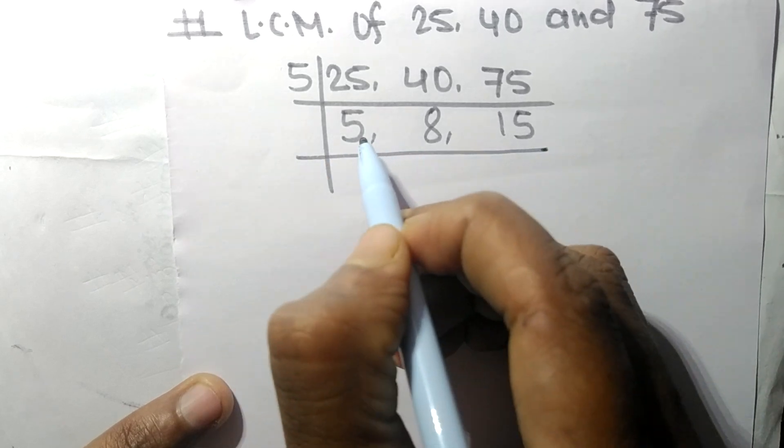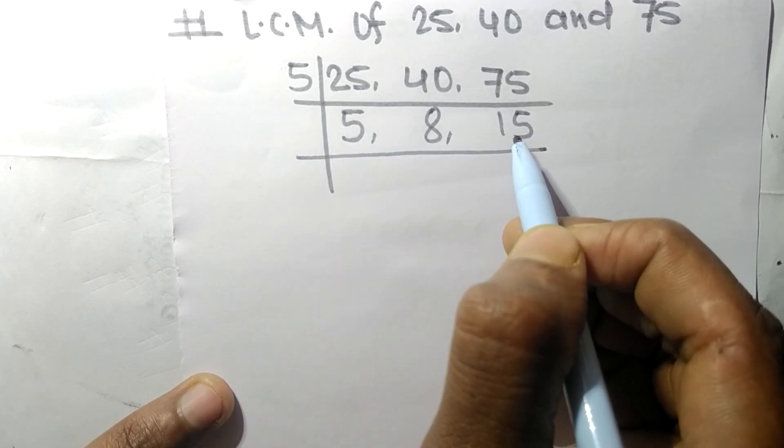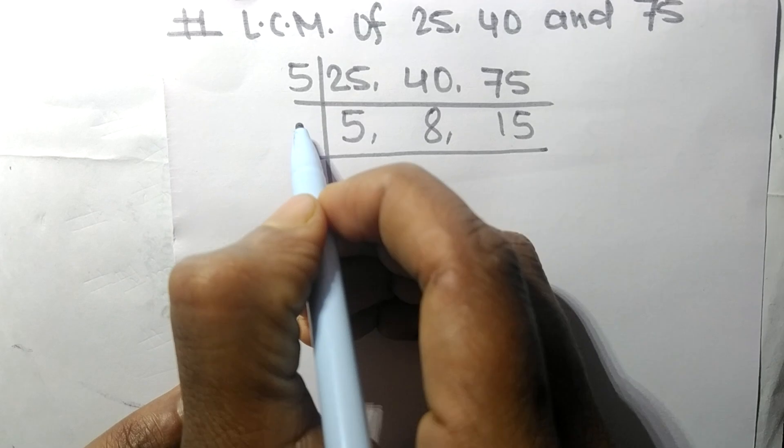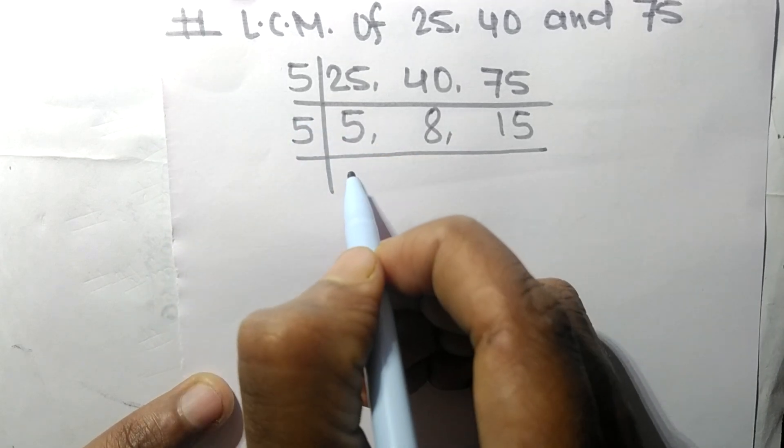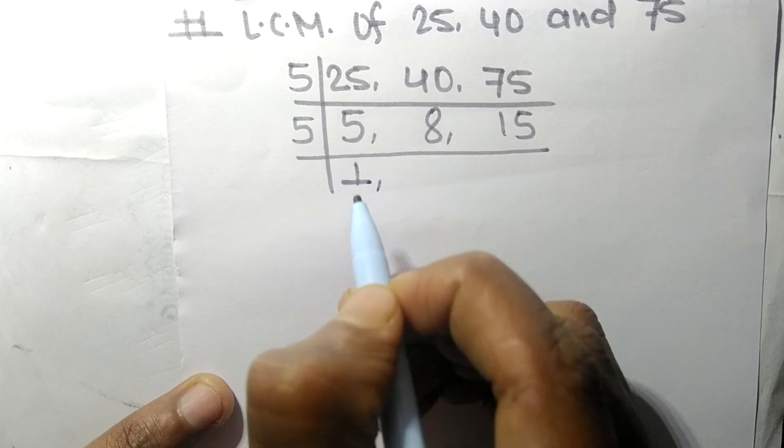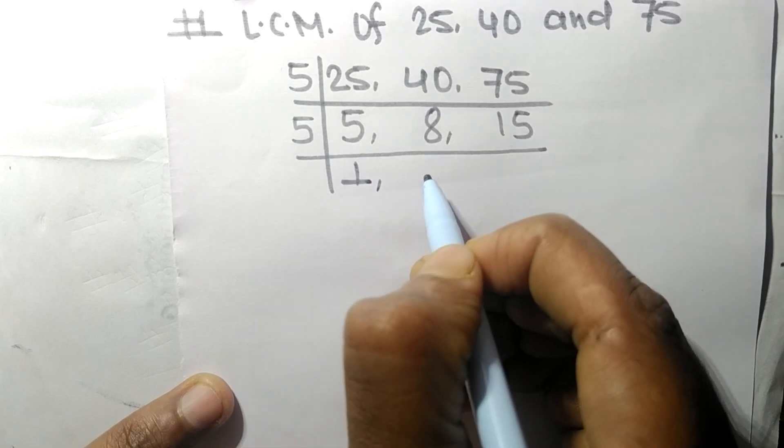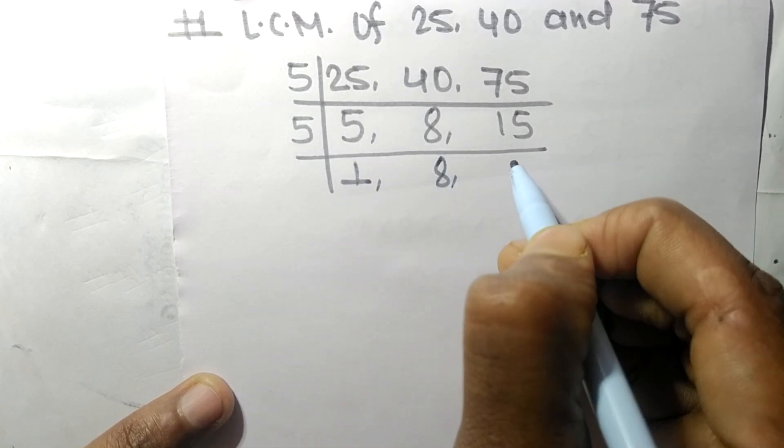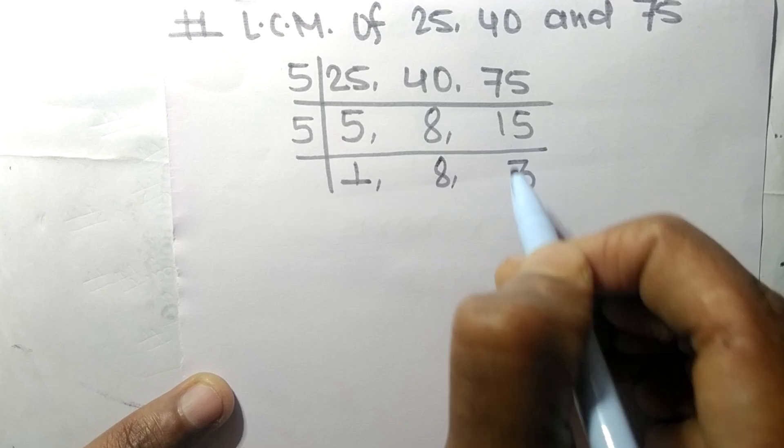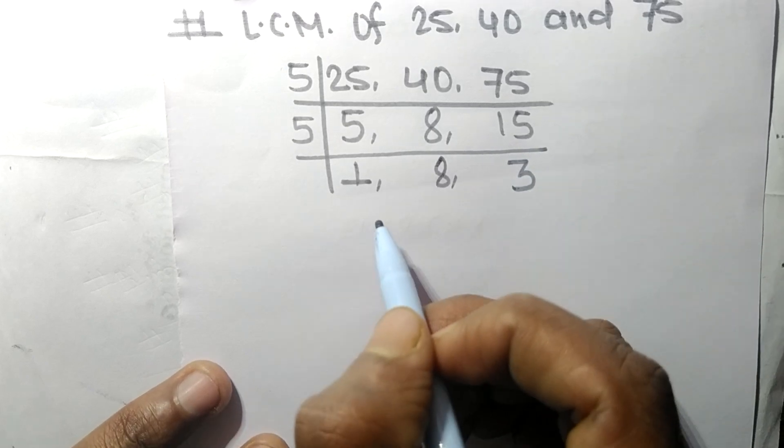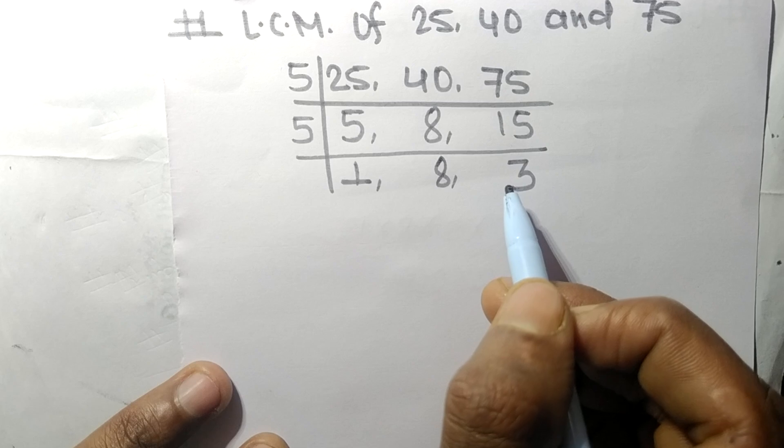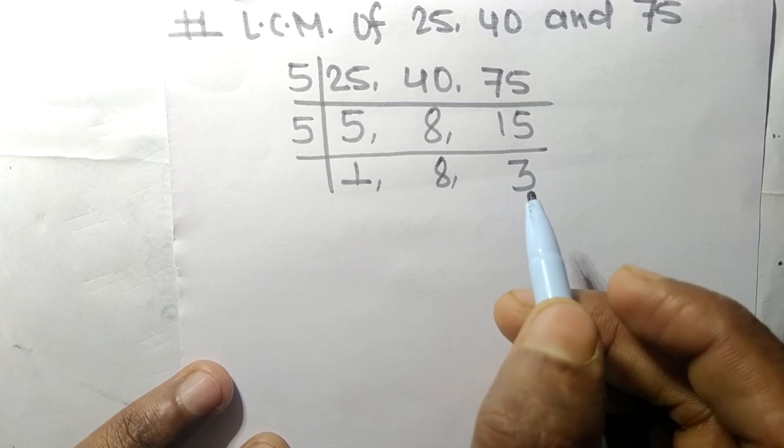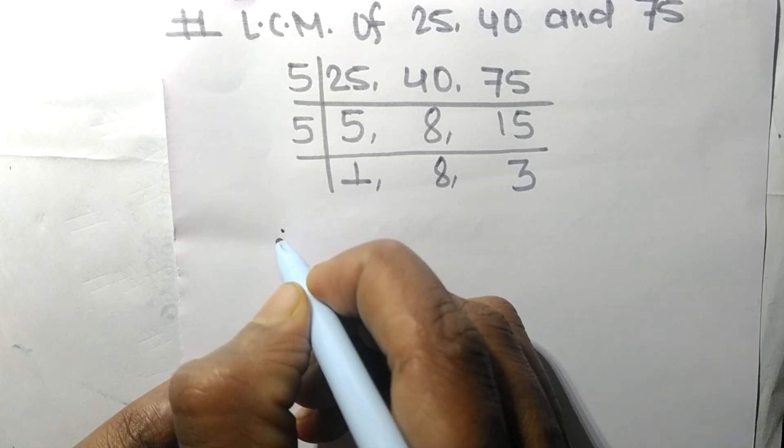So now this 5 and 15 are divisible by 5. So 5 times 1 means 5, it's not divisible so it is same. 5 times 3 means 15.